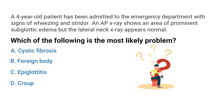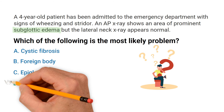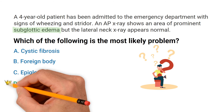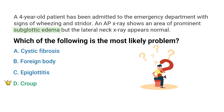This question tells us that the child has subglottic edema, which is an immediate giveaway that the correct answer has to be D) croup. Before we move along to the next question, let me tell you about our TMC test bank.